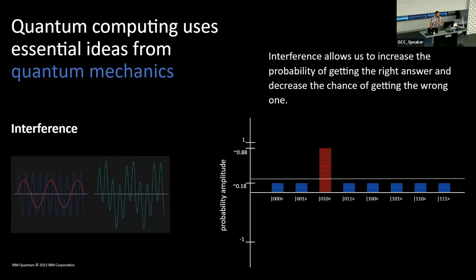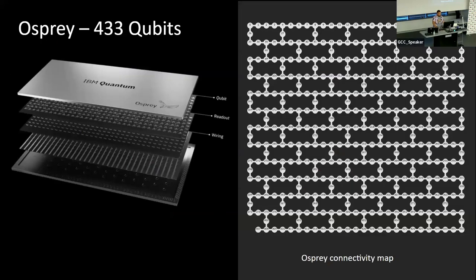Another property that's harnessed is interference. One of the things that makes quantum mechanics really hard is that things are no longer deterministic — they are probabilistic. Interference allows us to increase the chances of getting the right answer while decreasing the chances of getting the wrong answer. This is IBM's Osprey 433-qubit chip, their latest piece of hardware. All these spheres are your qubits, and this is a connectivity map showing the gates between each.